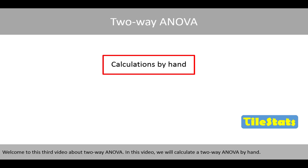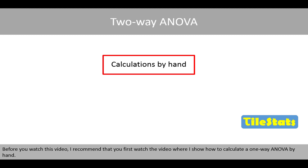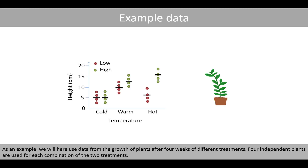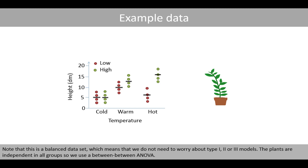Welcome to this third video about two-way ANOVA. In this video, we'll calculate the two-way ANOVA by hand. Before you watch this video, I recommend that you first watch the video where I show how to calculate the one-way ANOVA by hand. As an example, we'll use data from the growth of plants after four weeks of different treatments. Note that this is a balanced dataset, which means that we do not need to worry about type 1, 2, or 3 models.